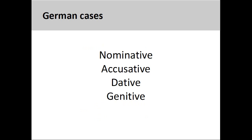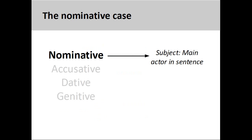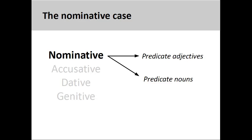German has four cases: nominative, accusative, dative, and genitive. The nominative case is used to mark the subject of the sentence, which is the person or thing performing the main action in the sentence. It is also used to mark the predicate adjective or predicate noun in a sentence.